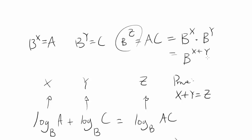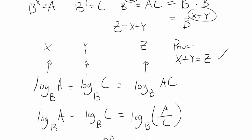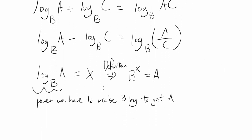So we know B to the Z is equal to B to the X plus Y. The bases are the same, and when you exponentiate, we know these two are equal. So that's telling you the exponents have to be the same. So Z is X plus Y, and we have proven that X plus Y is Z. So log base B of A, which is X, plus log base B of C, which is Y, gives you Z, or log base B of AC. So the first one, we are done.